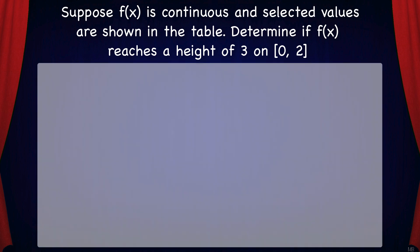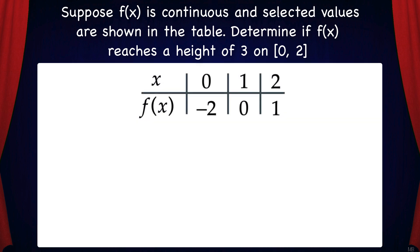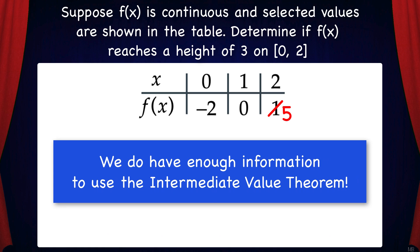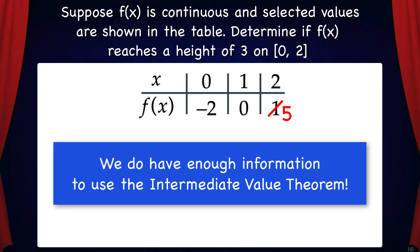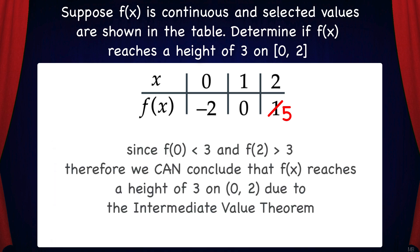But let's suppose the original problem was changed and f(2) equals 5. In this case, we do have enough information to use the Intermediate Value Theorem. Since f(0) is less than 3 and f(2) is greater than 3, therefore we can conclude that f(x) reaches a height of 3 on the interval 0 to 2 due to the Intermediate Value Theorem.